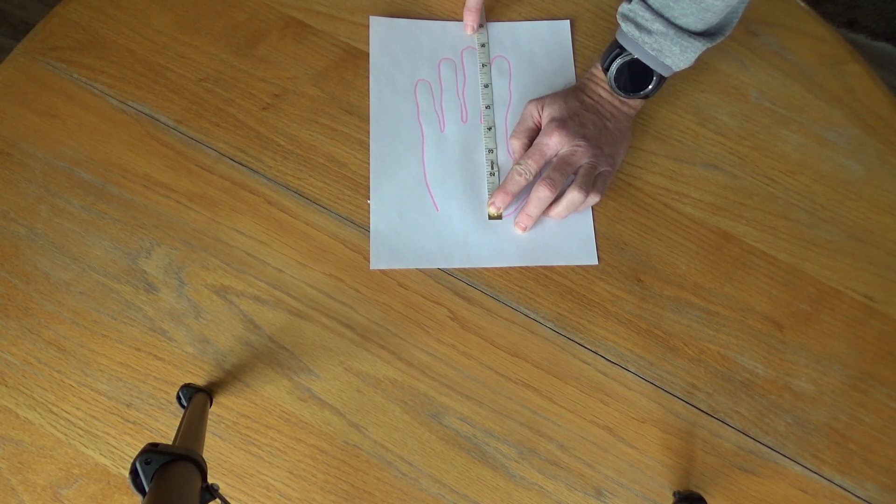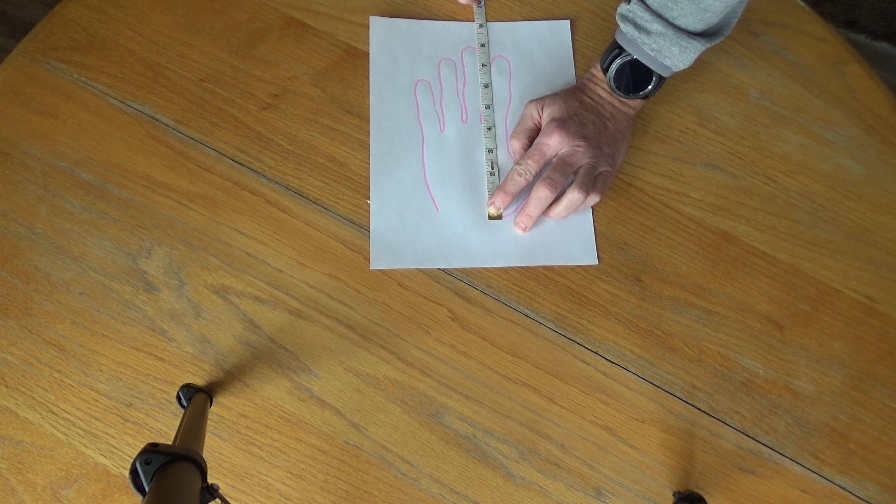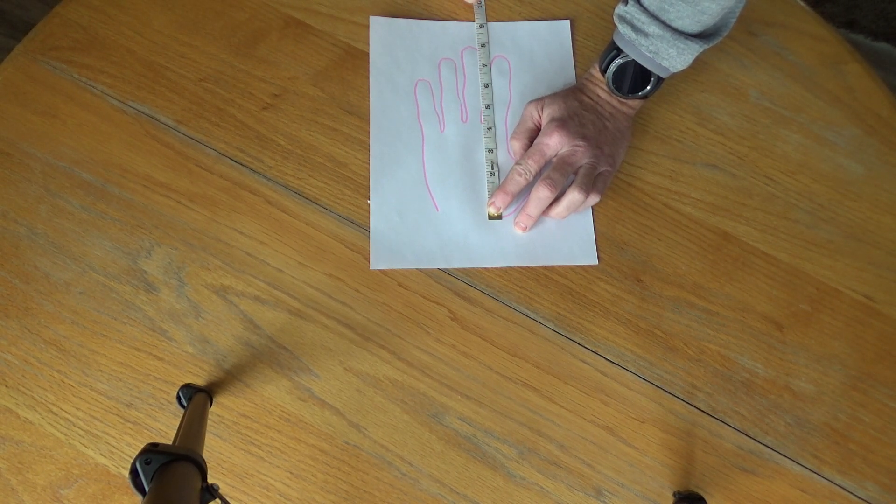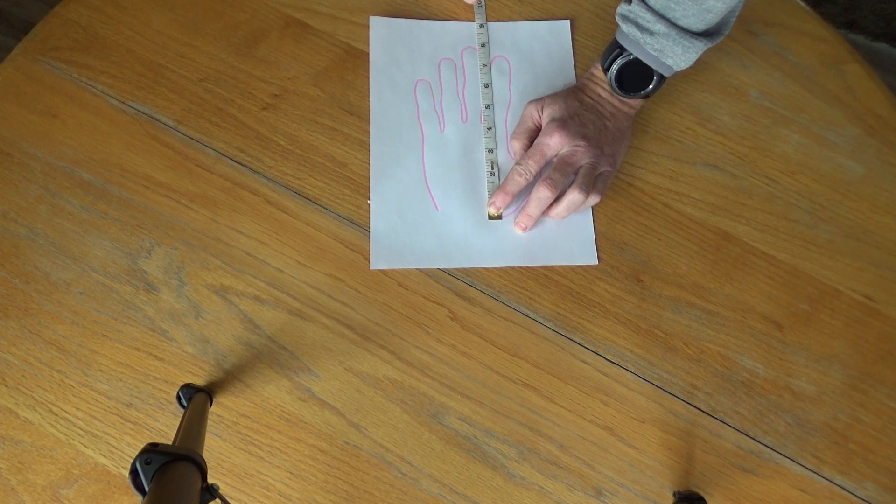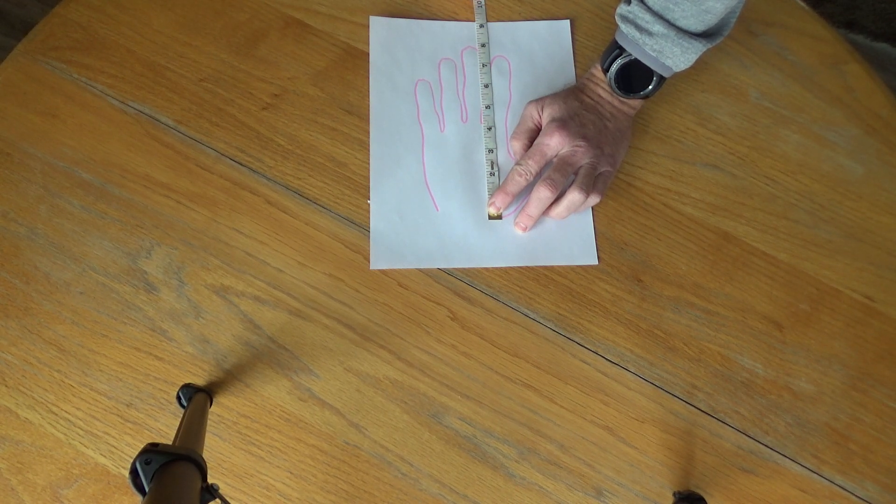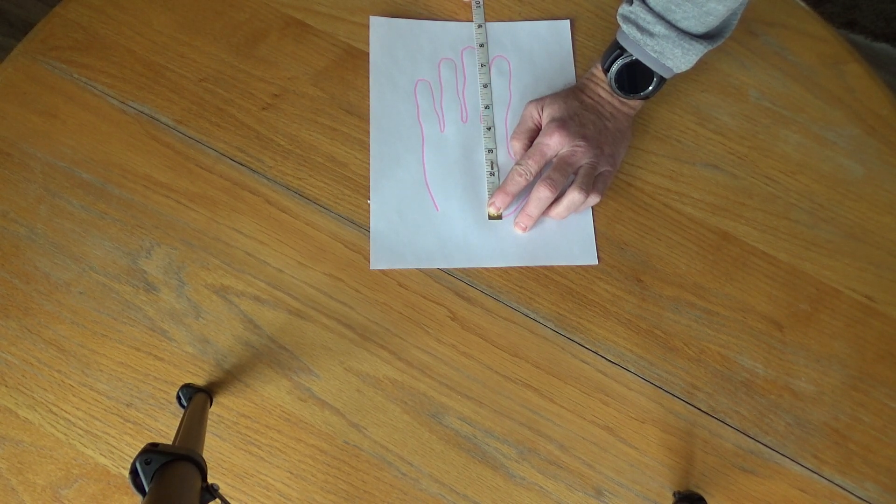Once you've got that measurement, then what you do is you add one to that number. So whatever that number is, you add one. My correct size of glove is a size nine based on the size of my hand.